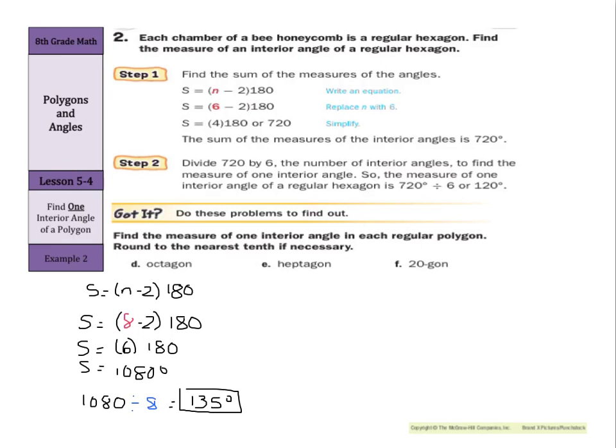Now what about the heptagon? Well, S = (n - 2) × 180. Now a heptagon has 7 sides, so S = (7 - 2) × 180. And S = 5 × 180. And S = 900.